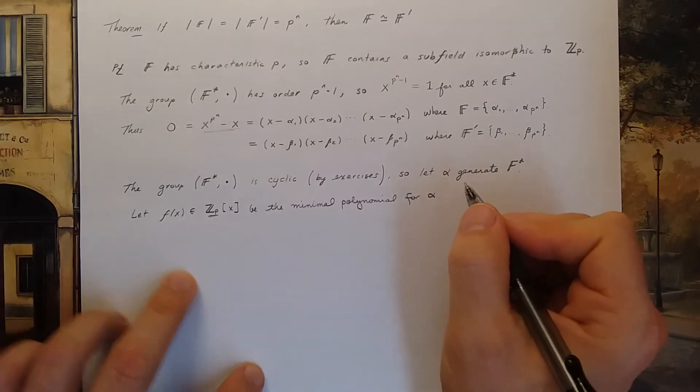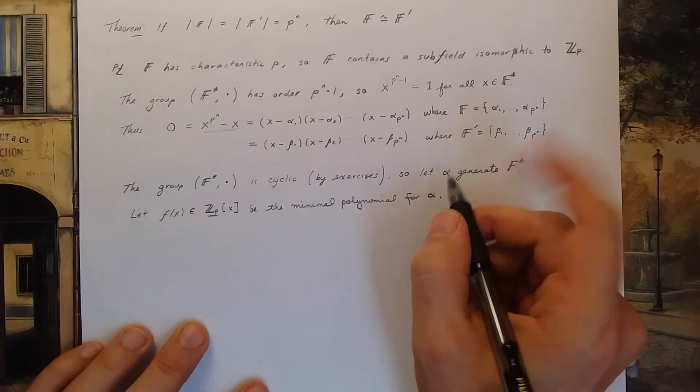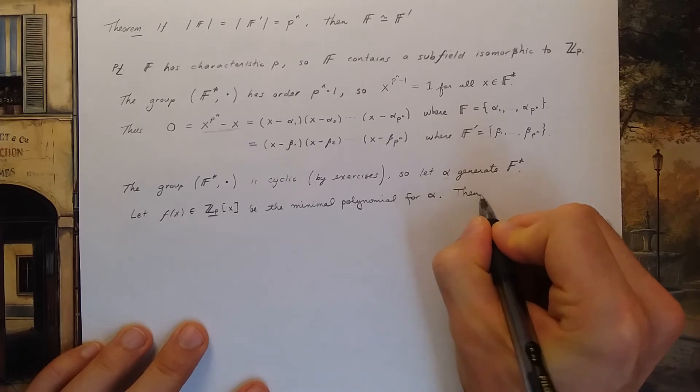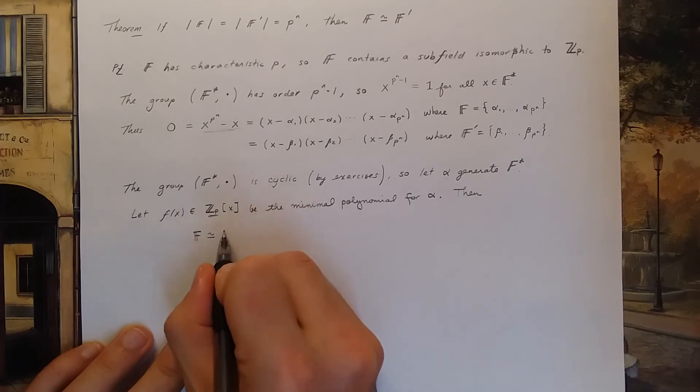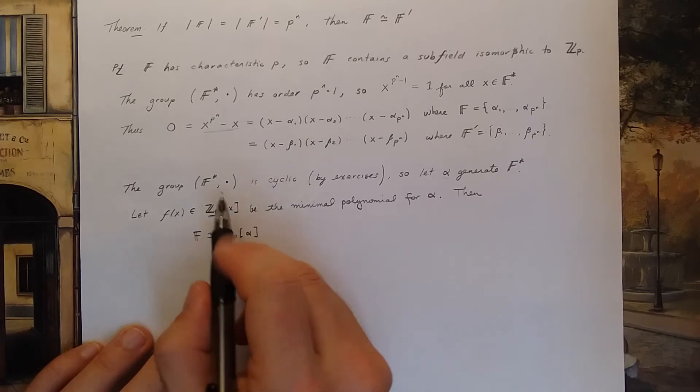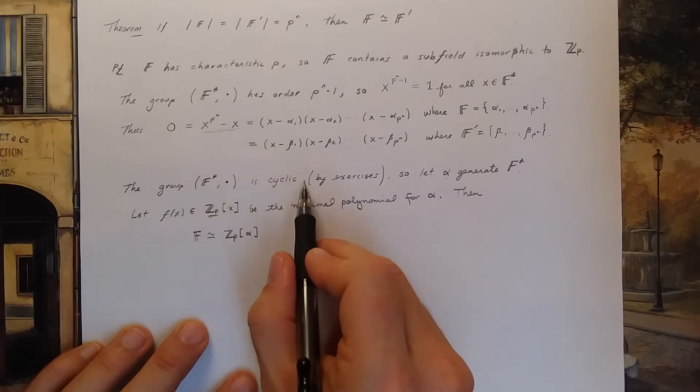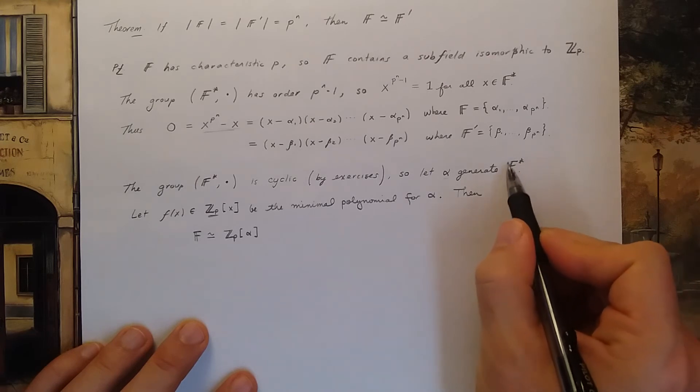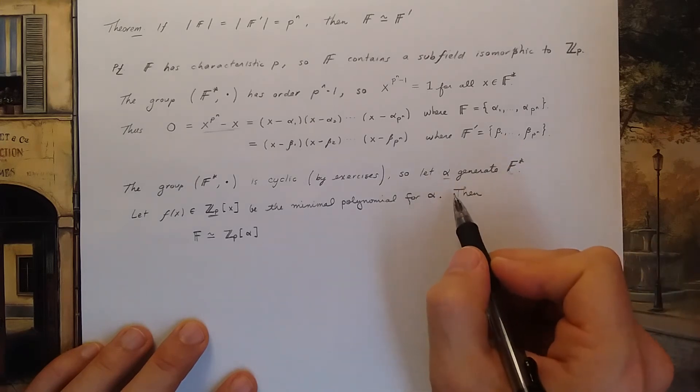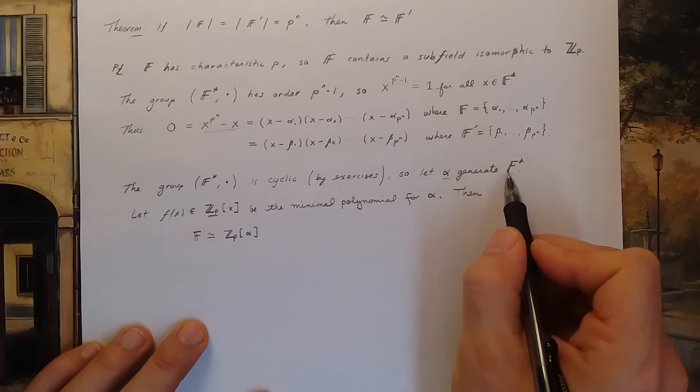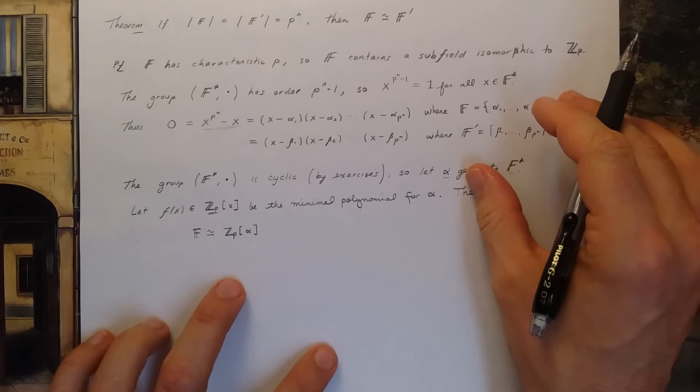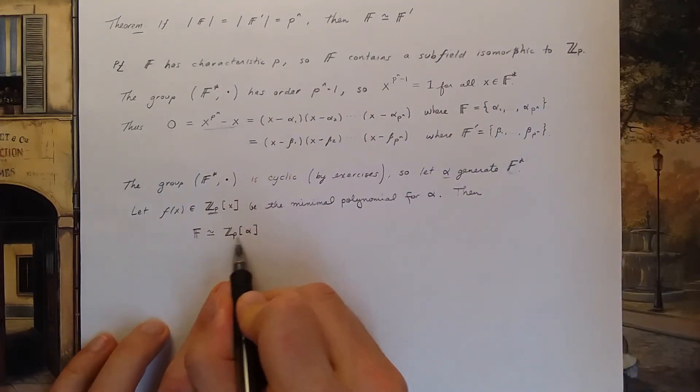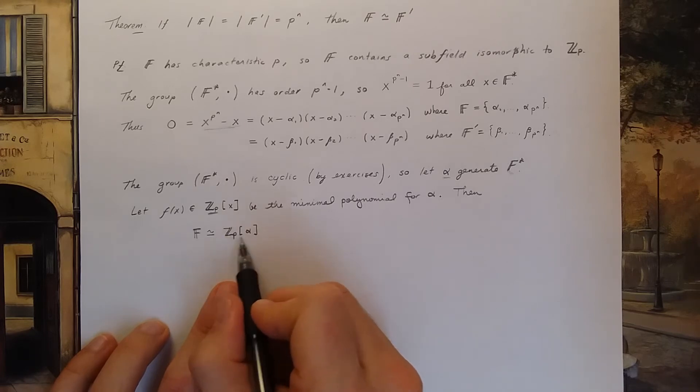What we are saying with these two sentences is really this. We have the field F is isomorphic to Zp adjoined alpha. This is because the group here is cyclic. That means any non-zero element in my field is a power of alpha. That means my field contains a subfield isomorphic to Zp and also contains every possible power of alpha. Well that's exactly what this field is. This field is the smallest field that contains Zp and every power of alpha.